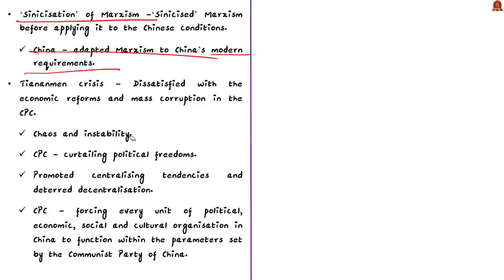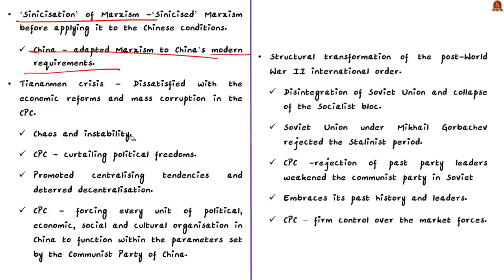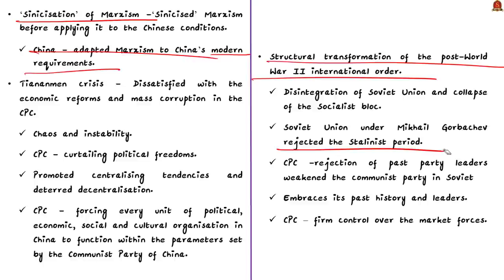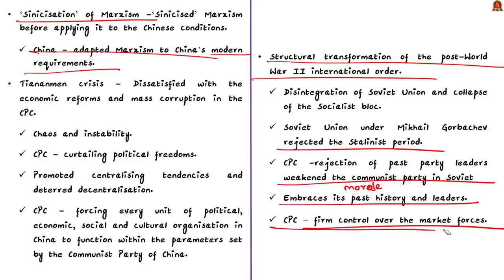The next important lesson for the CPC stemmed from the structural transformation of the post-World War II international order — in particular, the disintegration of the Soviet Union and the collapse of the Socialist Bloc in 1991. The Soviet Union under Mikhail Gorbachev rejected the Stalinist period, but the Chinese party believed this rejection of past party leaders had weakened the Communist Party in the Soviet Union. So CPC embraces its past history and leaders, and also forces firm control over market forces, making the Chinese economy heavily reliant on the party.